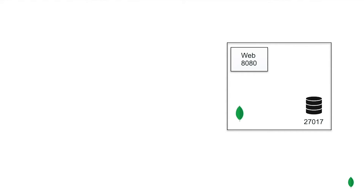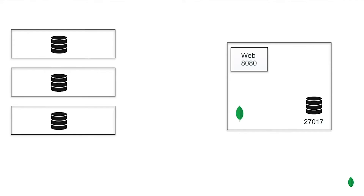Beside the web server, Ops Manager needs a MongoDB database to store metadata. Once Ops Manager is running we can set up a replica set. Replica sets are MongoDB processes that share the same data between all the members of the set. As you may already know, they provide redundancy and high availability. For the purpose of this demo we will be deploying a replica set with three members.